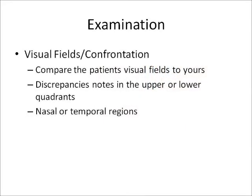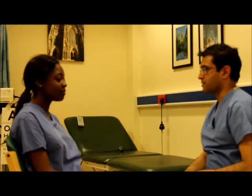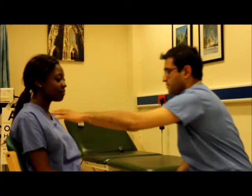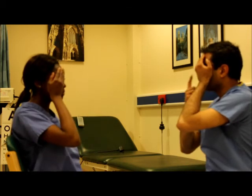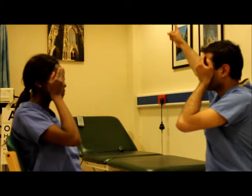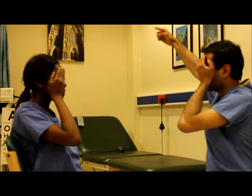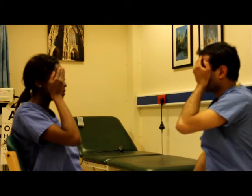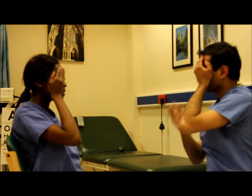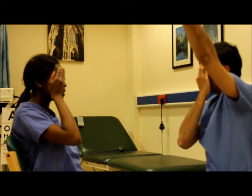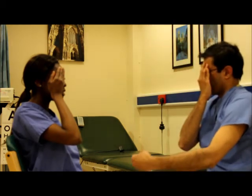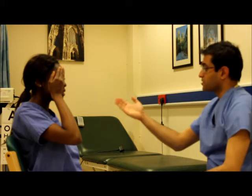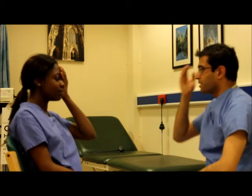Visual fields and confrontation can then be performed. This is done by asking the patient to sit directly opposite you, then asking them to cover one eye. The patient is asked to look at the nose, and then to tell you when they first see the waving finger coming into their vision, both in the upper and lower quadrants, and in the nasal and temporal regions. The patient should see your finger at the same time as you do.